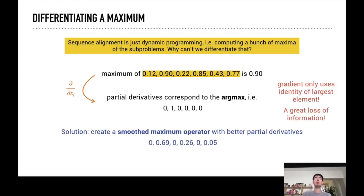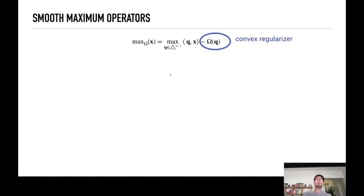So what we propose to use is a smoothed maximum operator which does retain some of the information of the largest values. This smooth maximum operator is defined here, so it uses a regularization function omega to make it behave a little bit better.